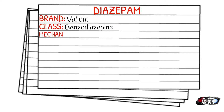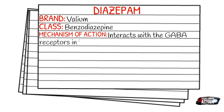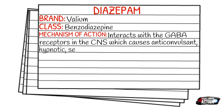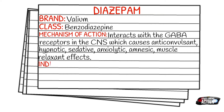Your mechanism of action, just like our other benzodiazepines that we've gone over — Versed and also Ativan — it interacts with the GABA receptors in the central nervous system, and this causes anticonvulsant, hypnotic, sedative, anxiolytic, amnesic, and muscle relaxant effects.